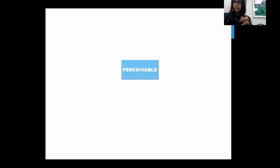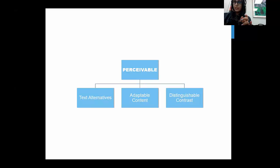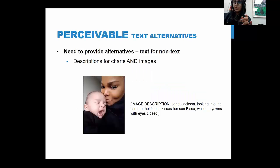The principle of perceivability is probably the most important for individual data designers. It breaks down into three areas based on WCAG guidelines: text alternatives, adaptable content, and distinguishable contrast. For text alternatives, if you have visual or non-text content, you need to provide a text-based alternative so it can be picked up by something like a screen reader.